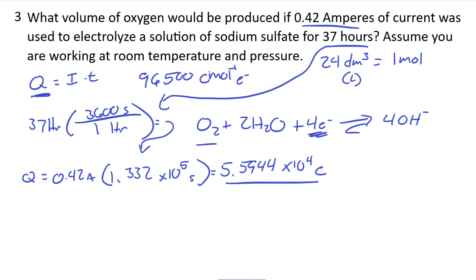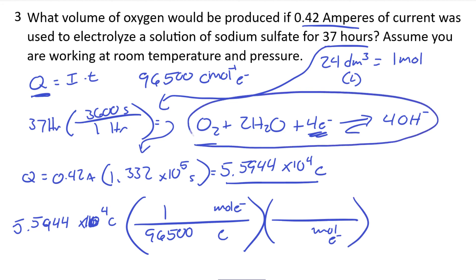So that's how many coulombs. So we can actually start there to do our dimensional analysis. So 5.5944 times 10 to the 4 coulombs. We want to get rid of coulombs and we can use Faraday's constant, which is that there are 96,500 coulombs per mole. That's moles of electrons. We want to get rid of that. So moles of electrons. And based on this equation right here, four moles of electrons are needed for every one mole of oxygen.